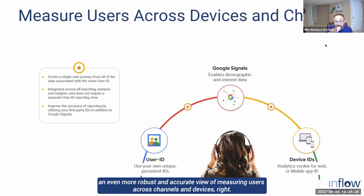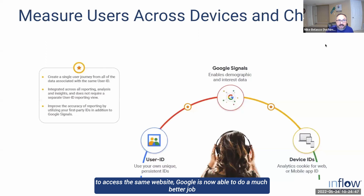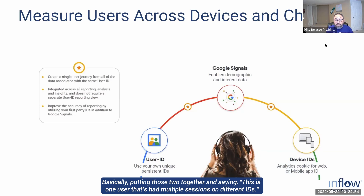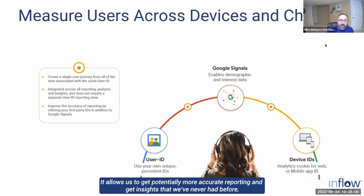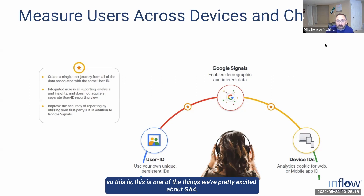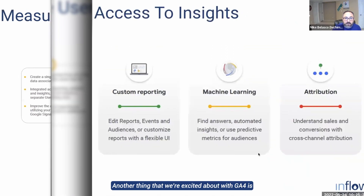One of the cool things we're really excited about with GA4 is an even more robust and accurate view of measuring users across channels and devices. If you're using your cell phone and your laptop to access the same website, Google is now able to do a much better job putting those together and saying this is one user with multiple sessions on different IDs. This allows us to get a better understanding of the customer journey and potentially more accurate reporting.